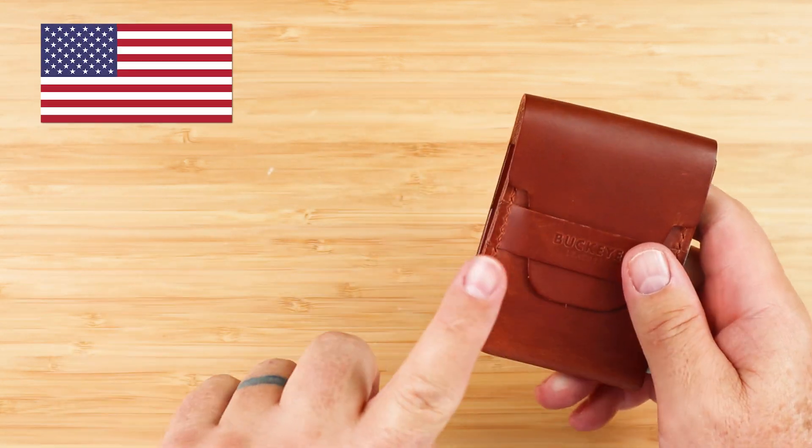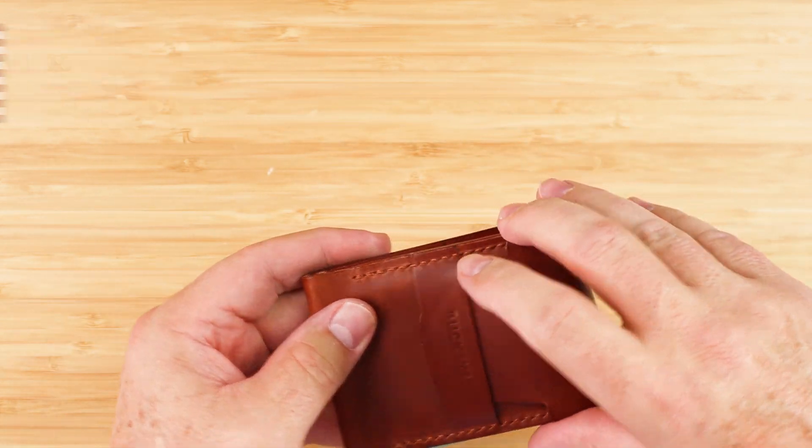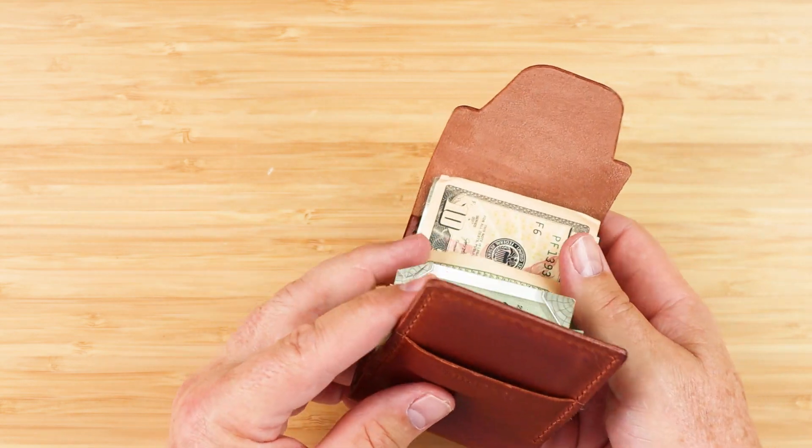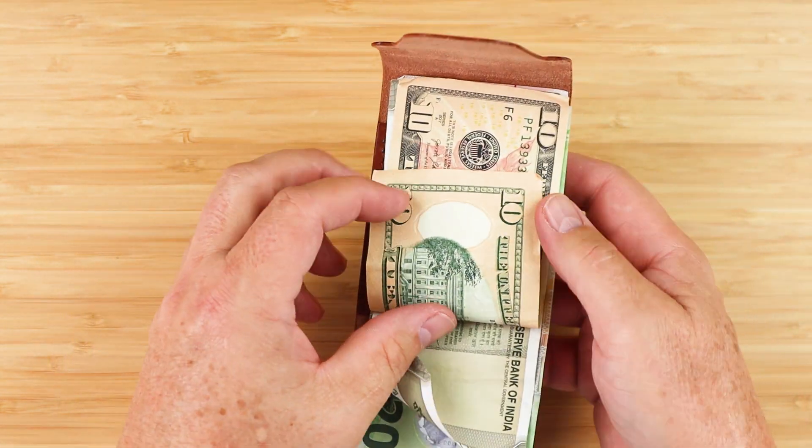This is designed and made in the United States. The Badlands wallets are made from either Italian Vecetta veg tan leather or from Crazy Horse chrome tan leather, which is the gray color.